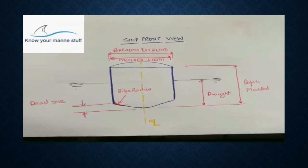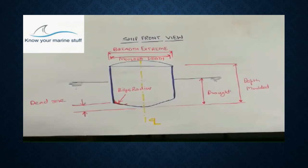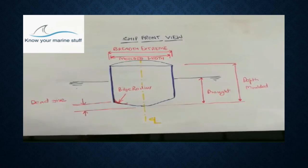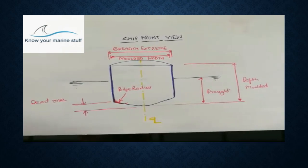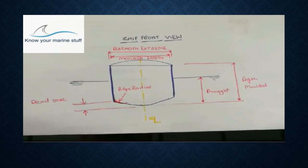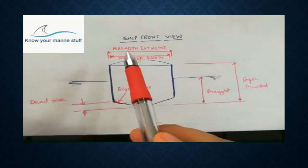Breadth can be expressed in two forms: breadth extreme and molded breadth. Breadth extreme is the maximum beam wherever it occurs on the hull. It may be above or below the water level. This is known as breadth extreme.